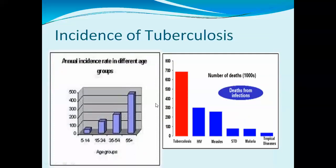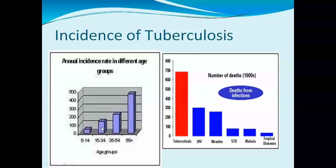The incidence of tuberculosis also shows data on number of deaths compared to other diseases like HIV, measles, sexually transmitted diseases, and malaria. Regarding age groups, persons aged 55 and above show the highest proportion of TB cases, followed by the 35 to 54 age group, then 15 to 34, and 5 to 14 age groups.